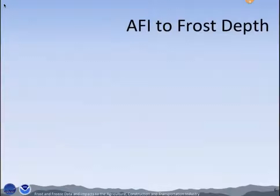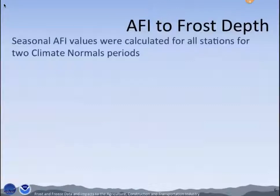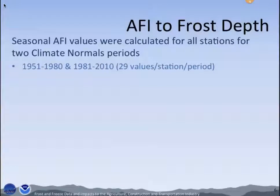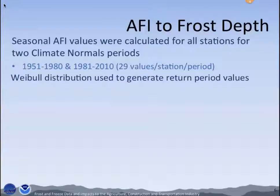Now, converting AFI to frost depth. We basically took the seasonal values for all the stations in our study — those 5,599 stations. We calculated all the seasonal values for two different climate normal periods: the first being 1951 to 1980, and the second being 1981 to 2010. This gave us 29 values per station per period. We then took those 29 values for each station and for each period and put them into a probability distribution.